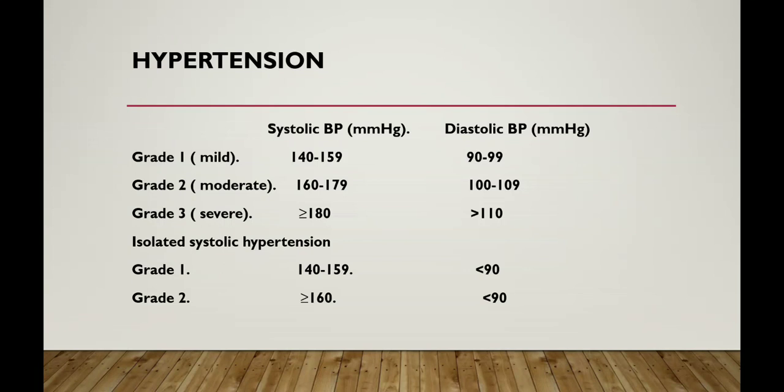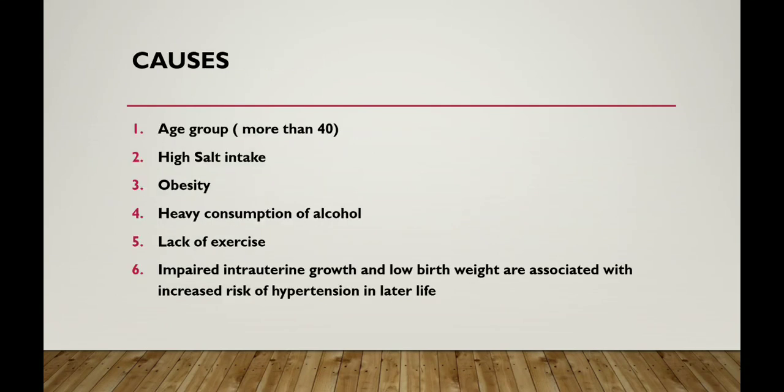Isolated systolic hypertension can be divided into 2 grades. Grade 1 systolic BP is 140-159 mmHg with diastolic BP less than 90 mmHg. Grade 2 systolic BP is 160 mmHg or above with diastolic BP less than 90 mmHg.